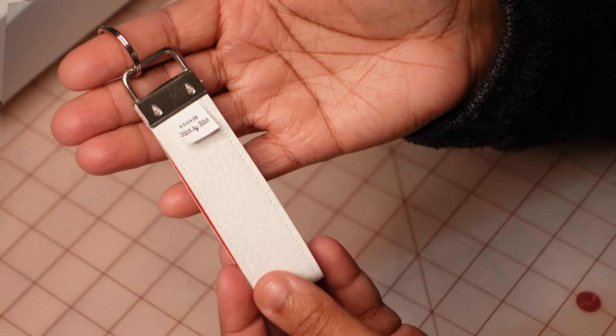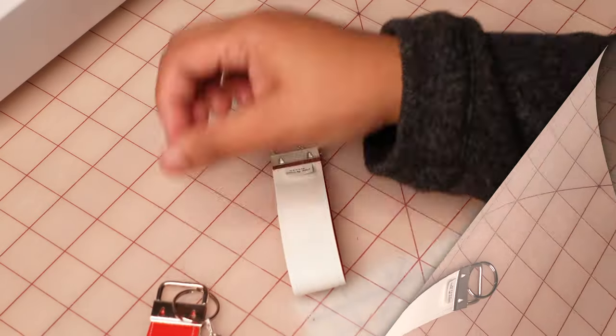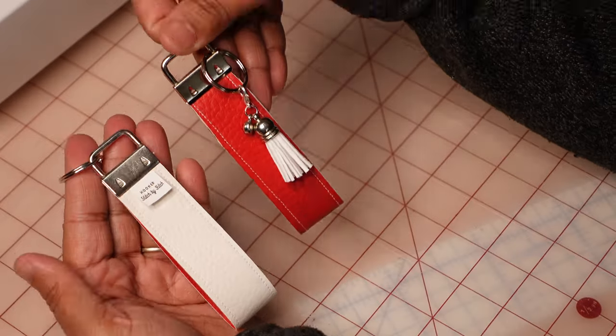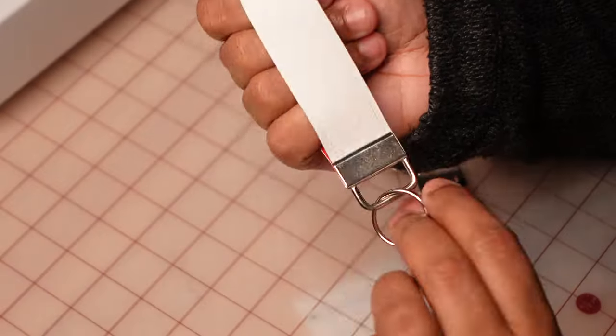It is all completed. This white one I did add the little tag up on top, and the red one I just added a little tassel. I hope you enjoyed this tutorial in making these key fobs today with us.